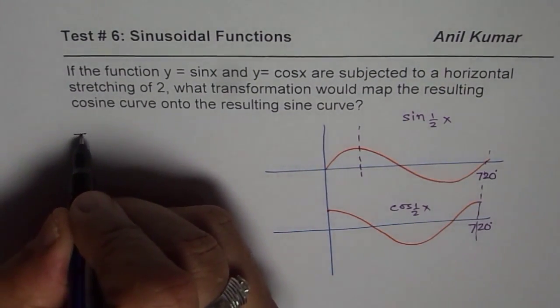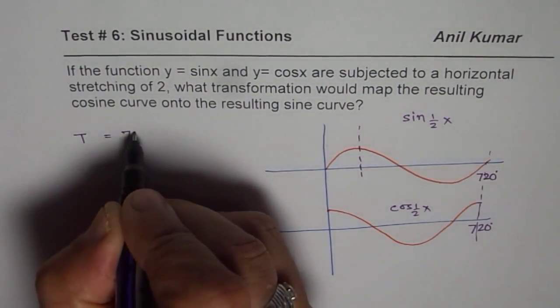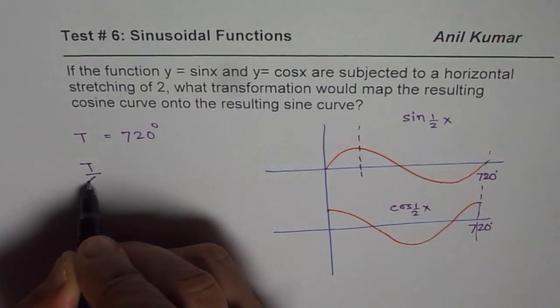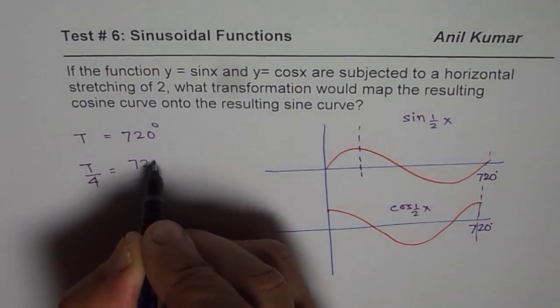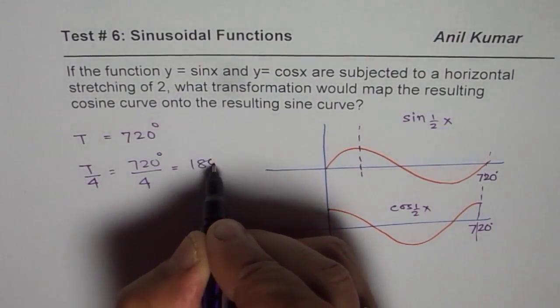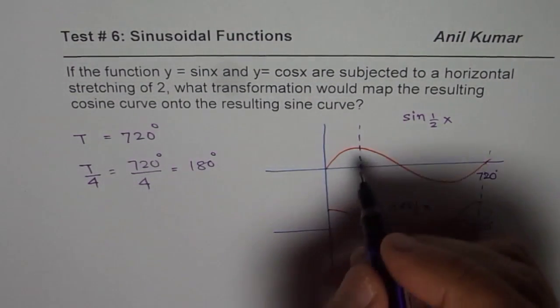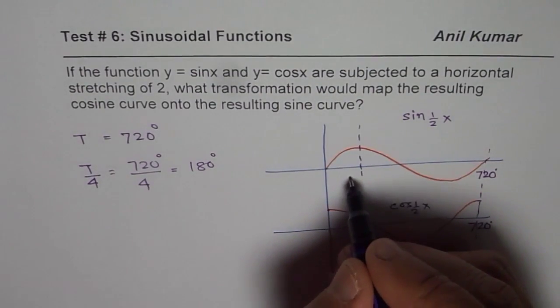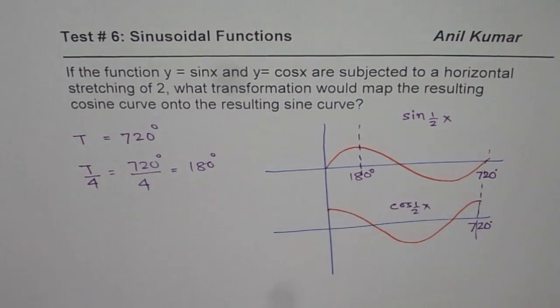So we say time period is 720 degrees. Quarter of 720 is 720 degrees divided by 4 or 180 degrees.